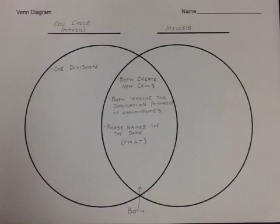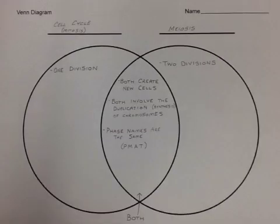Now let's focus on mitosis. In mitosis, we only have one division that occurs. This differs from meiosis, where there are two divisions. The reason meiosis has two divisions is that we have to take that doubled number of chromosomes and cut it in half, and then cut it in half again so we can get haploid cells — we'll talk about haploid in a few moments.